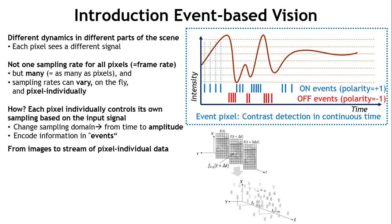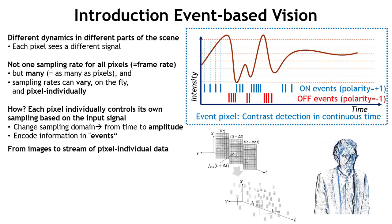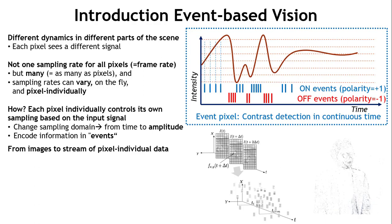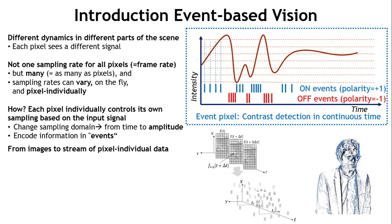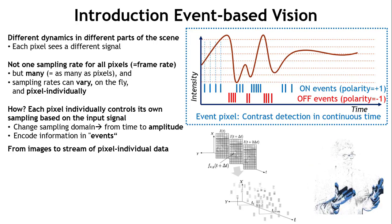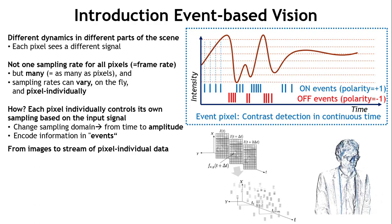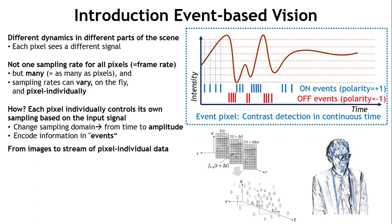We go from a sequence of static images to a per-pixel individual stream of event data describing the dynamics in the scene. You can see a person moving in front of an event camera — only things that move or change produce data. The static background is not acquired at all, so you have very relevant data for a dynamic vision process, with redundant information removed already at the sensor level.